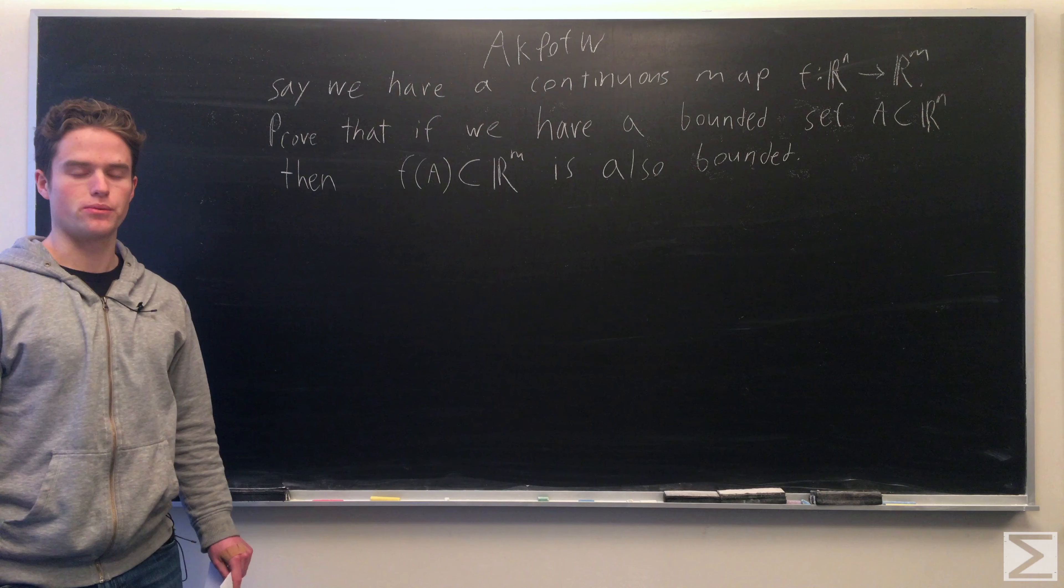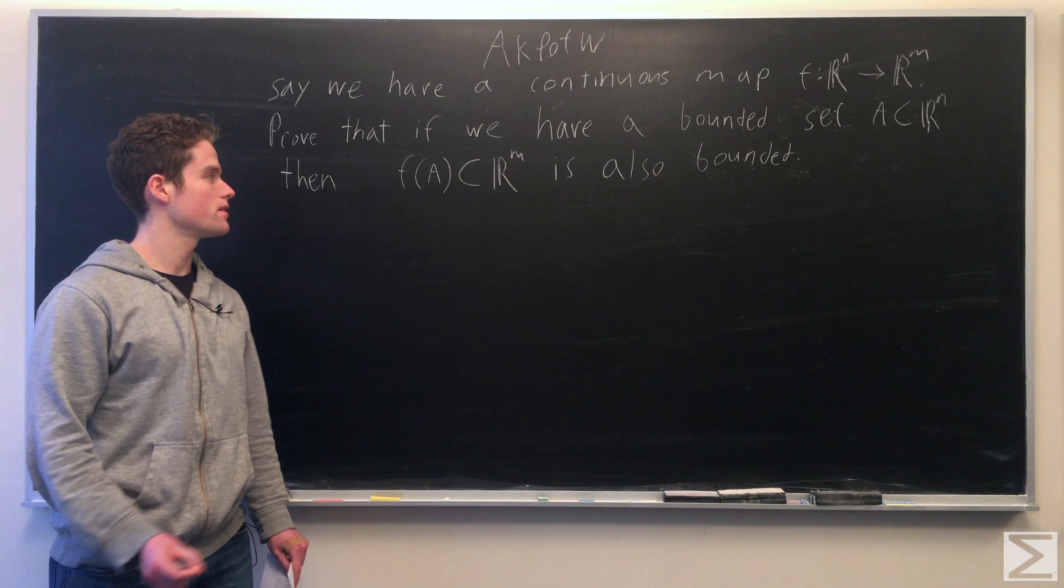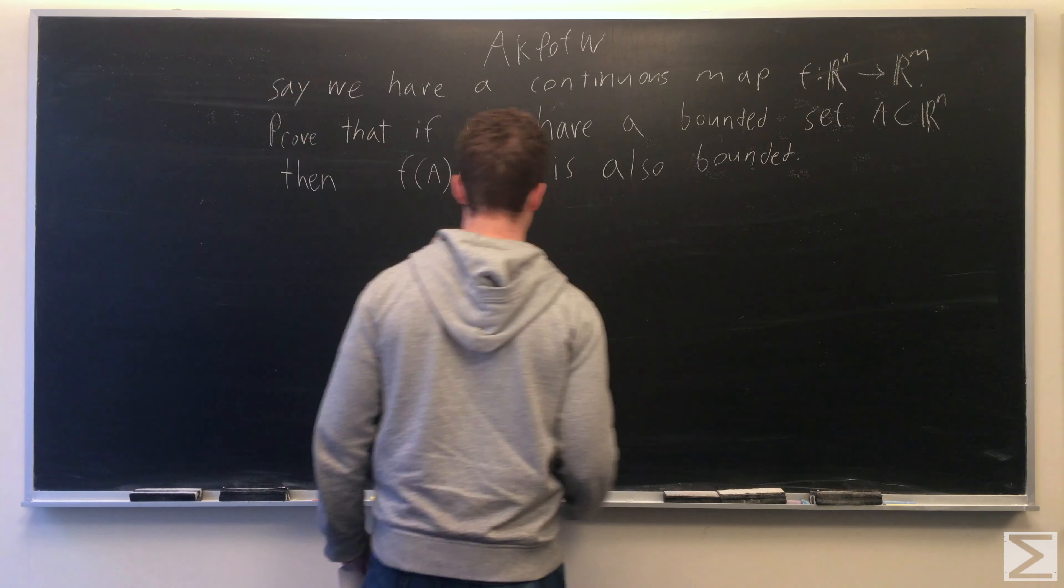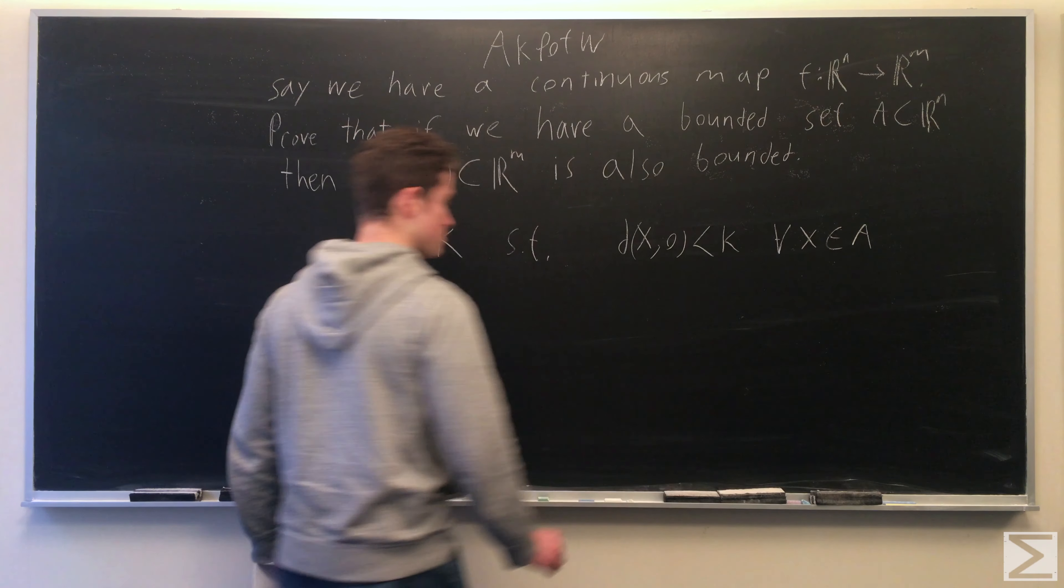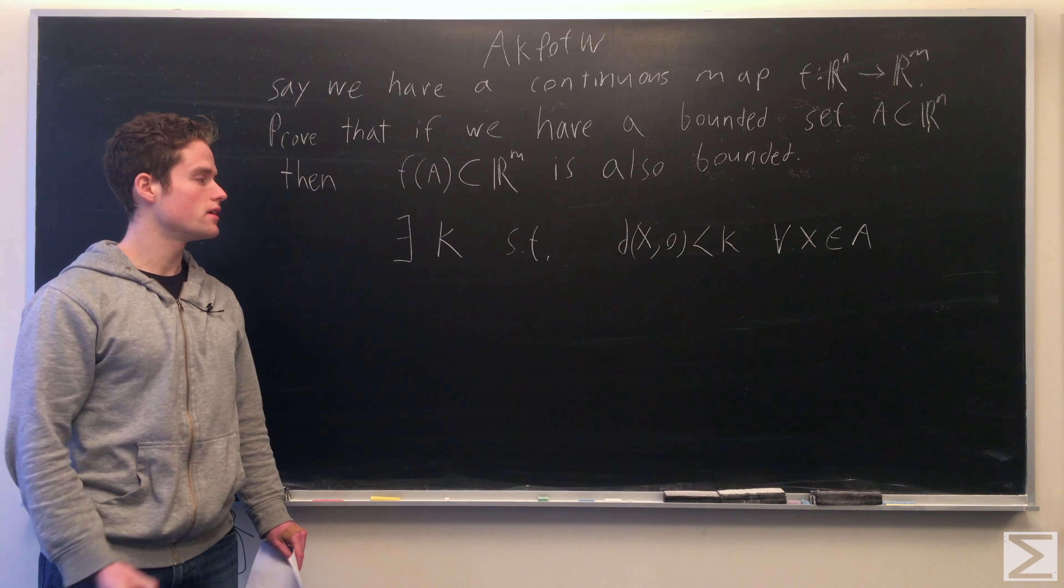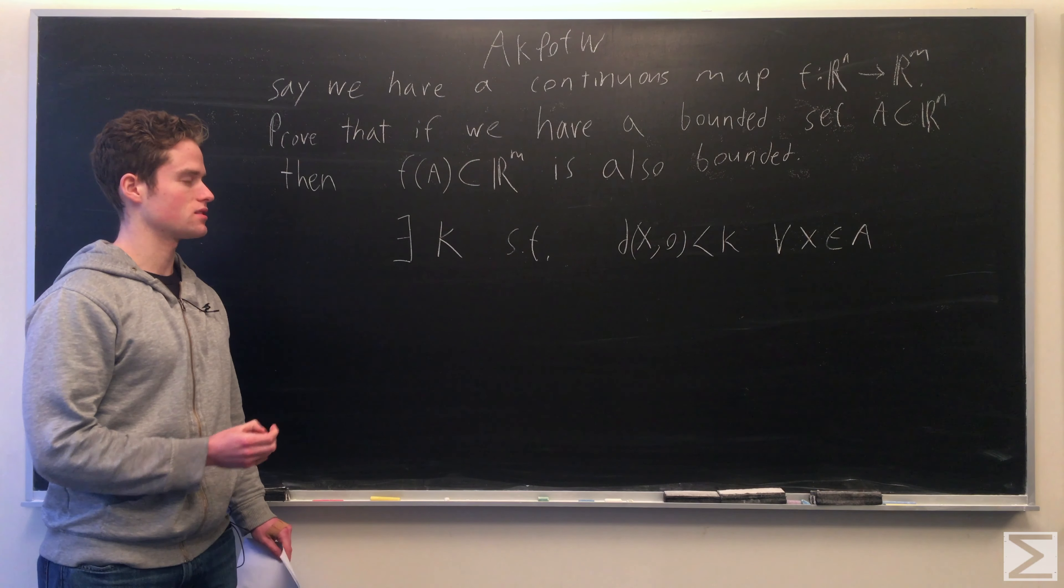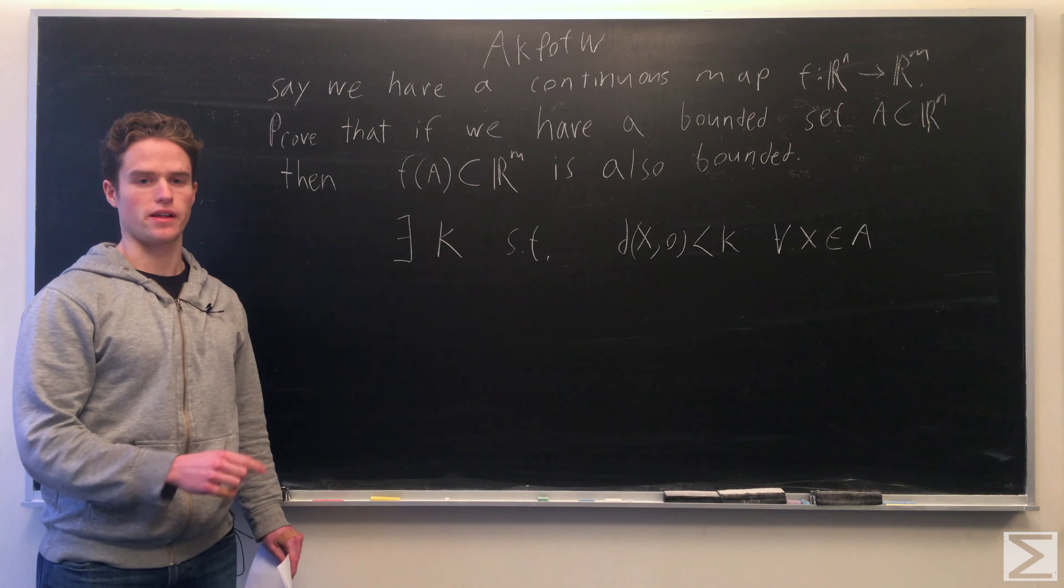The first thing we're going to do is show that we have a closed set that contains A that is also bounded. This is the definition for saying A is bounded. We say there exists some k such that the distance from x to the origin is less than k for all x in A.